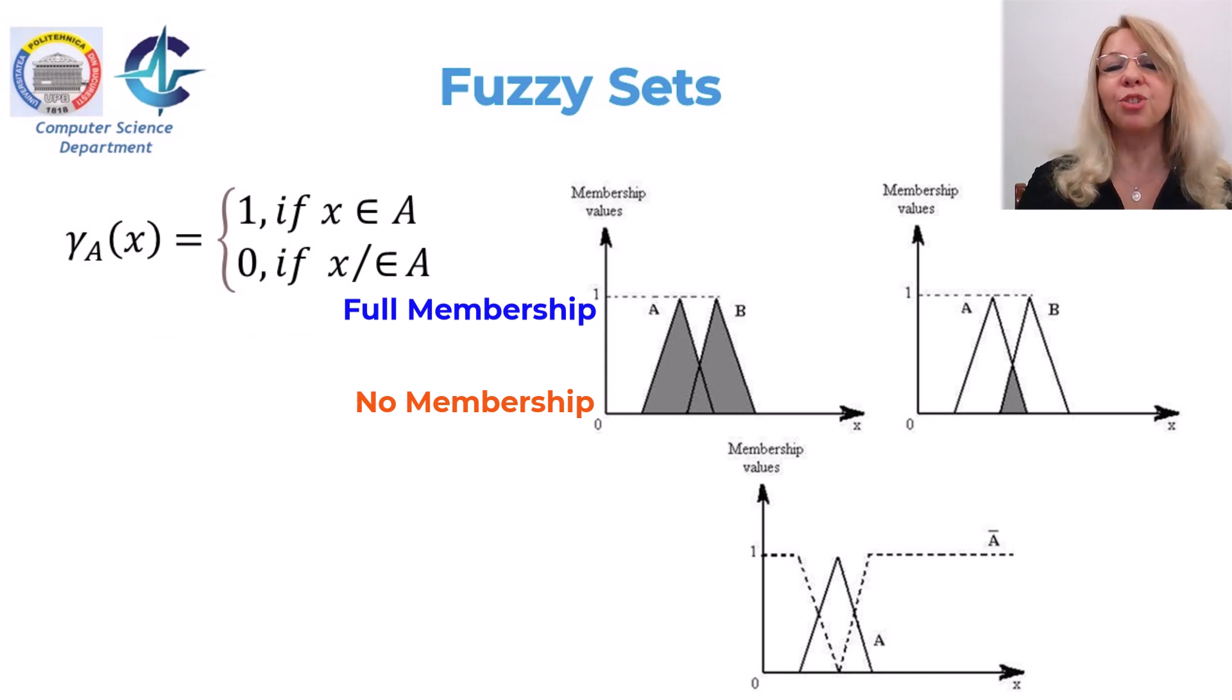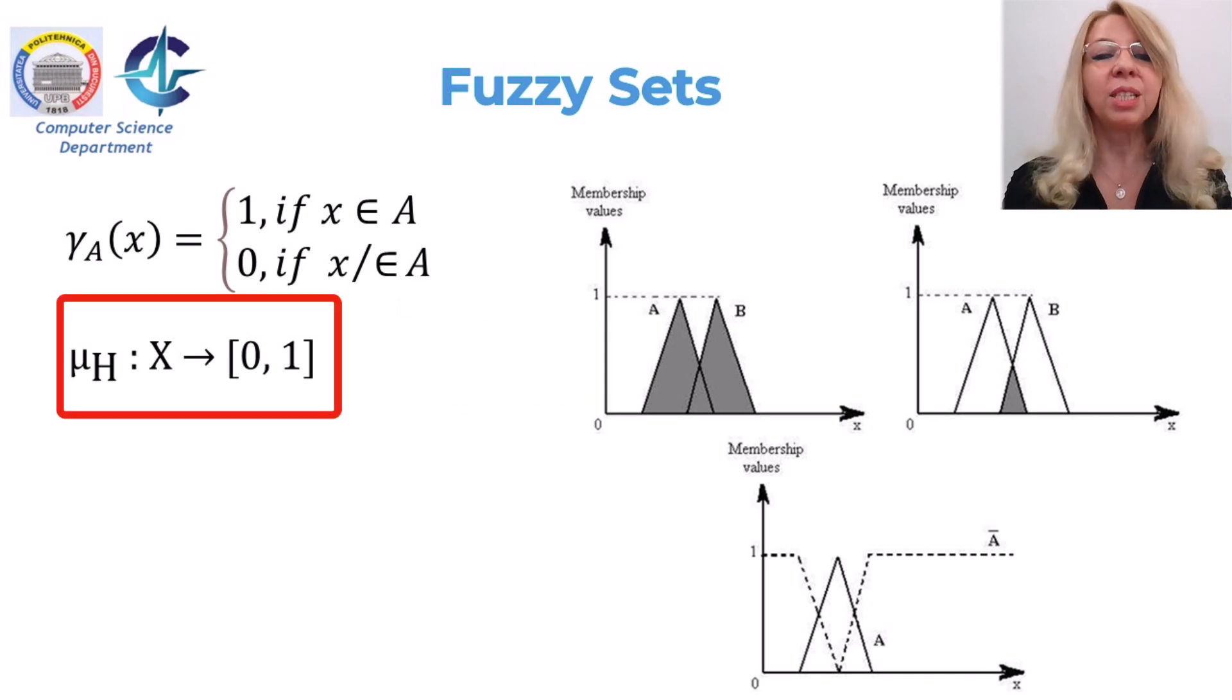Fuzzy sets are always functions that map a universe of objects X onto the interval [0, 1]. In this way, the fuzzy set H is a function mu H that carries X into the interval [0, 1].